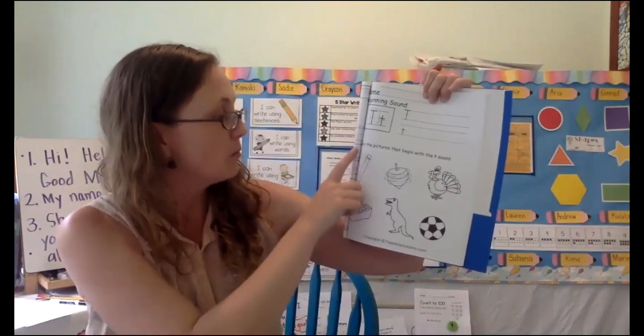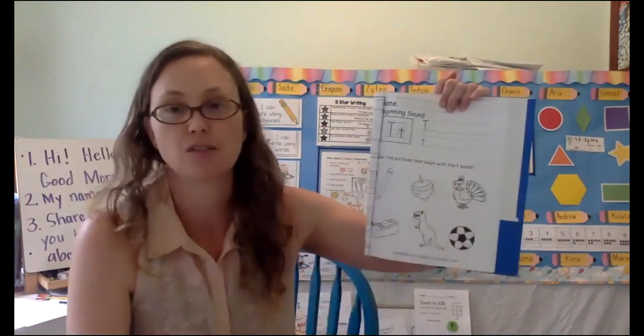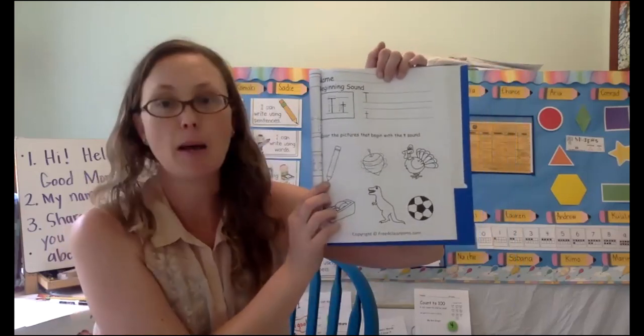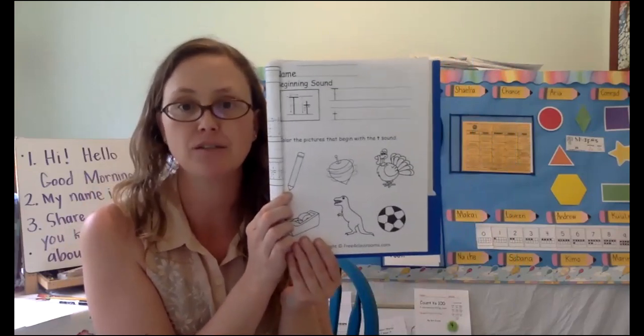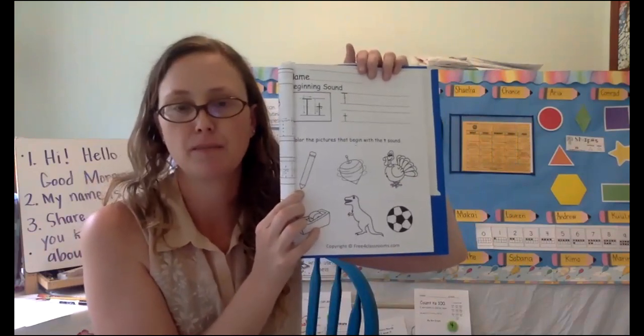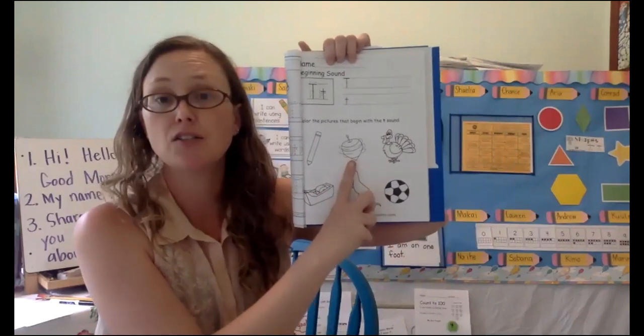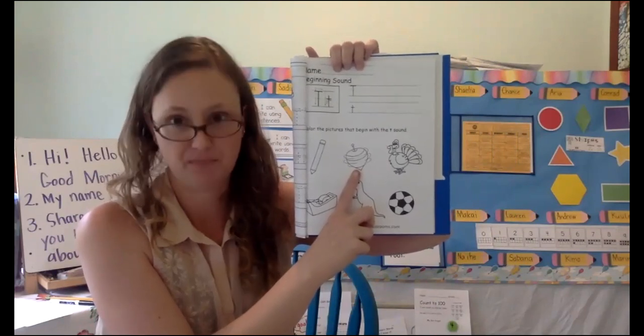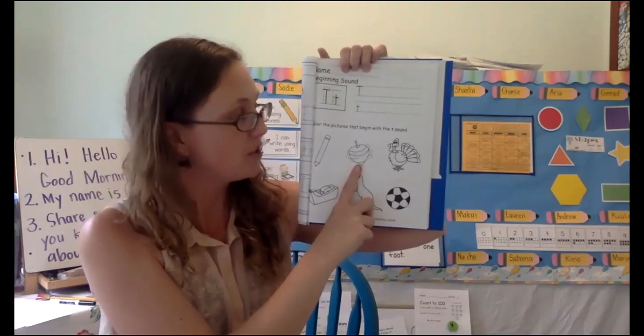So let's see what pictures we have here. We have a picture. Let's read the directions. Color the pictures that begin with the t sound. What sound does t make? T, t. All right. So the first one here is a pencil. A pencil. Will we color the pencil? What's the first sound in pencil? T. All right. Next one is a top. Would we color our top? Sure would. Top begins with a t sound.